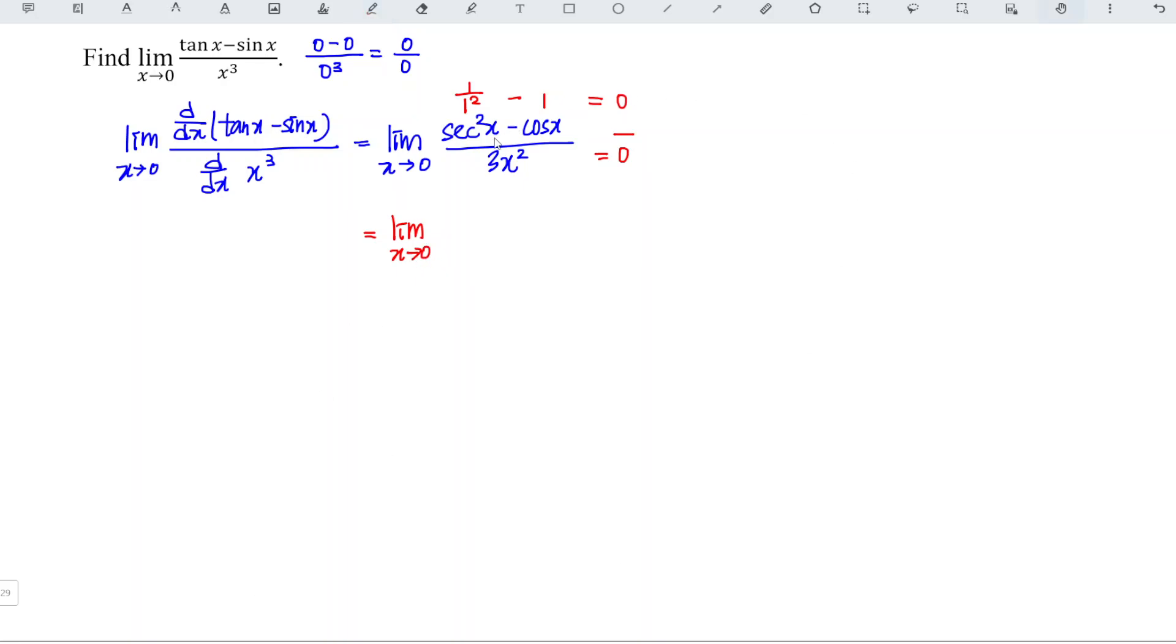When we differentiate sec²(x), we can apply the formula that we derived in the previous video. For this case, we should have 2tan(x)sec²(x). When we differentiate cos, we get -sin. Negative negative is positive, so we have positive sin(x) over 6x.